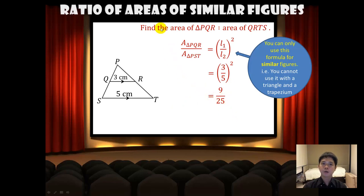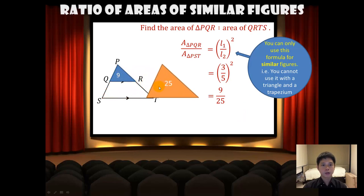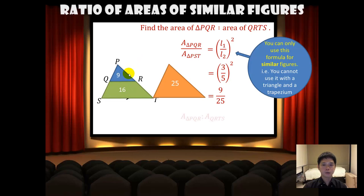The ratio of the area of triangle PQR to triangle PST is 9 to 25. Therefore, the ratio of the area of triangle PQR to the area of trapezium QRTS is 9 to 16. We simply subtract 9 from 25 to get 16.